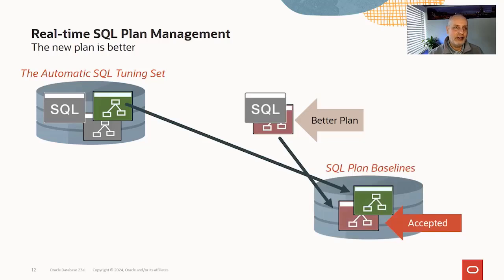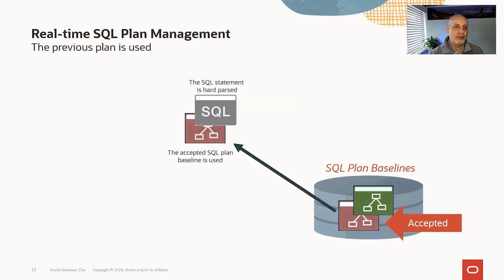If we find that the new plan is better, we'll create SQL plan baselines for the two plans and accept the better plan — so subsequently the new plan is used. This is not a worrying situation: we've just got a better plan and we'll allow the optimizer to use it in future. If the plans are similar, we create the SQL plan baseline but don't need to accept either of them — essentially both are allowed, and the optimizer can use either plan.